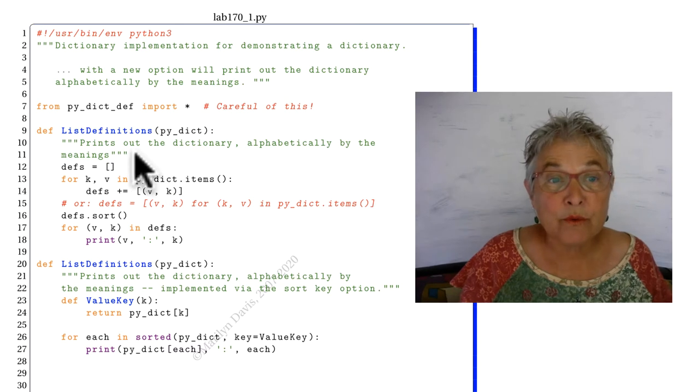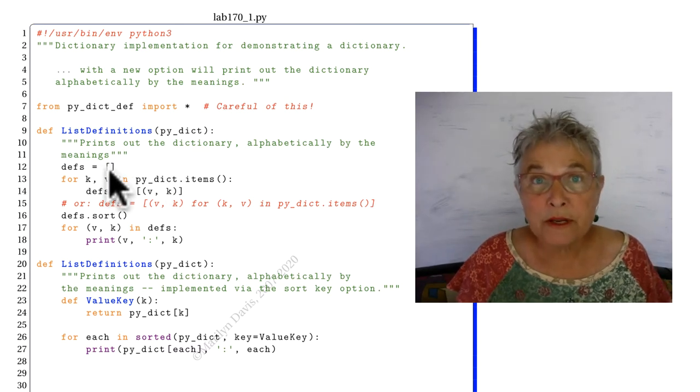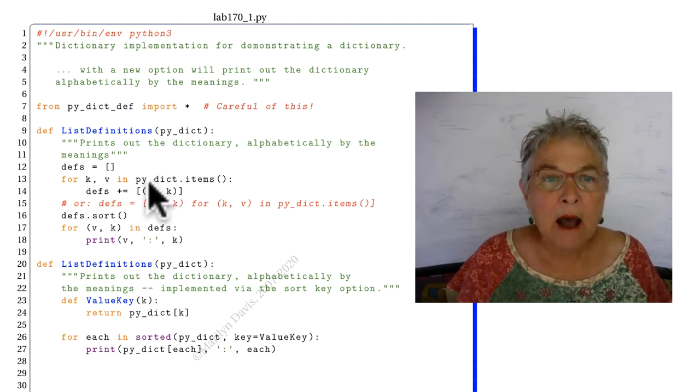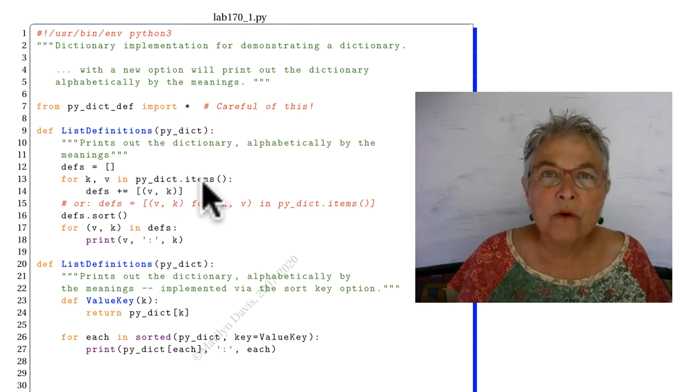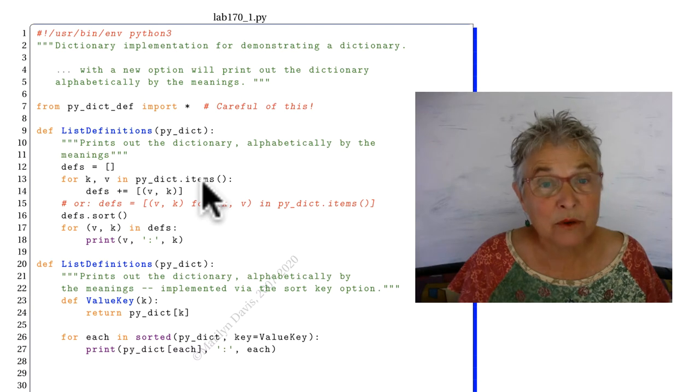Here's a very straightforward way where I start with an empty list, and now I'm asking for the PI DICT items. Those are key value pairs but as tuples. So that returns tuple after tuple of key value.